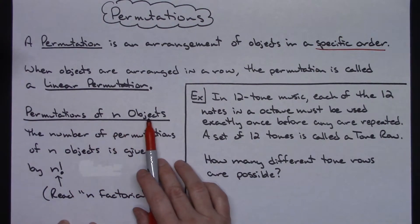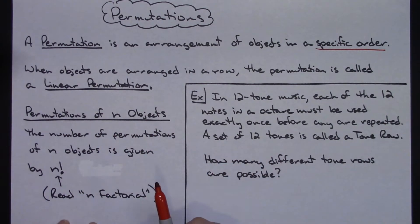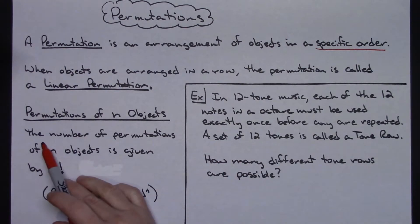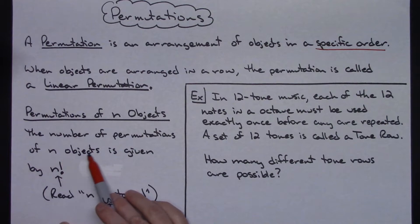A permutation of n objects—so we've got n number of objects here, and we need to find the number of permutations. The number of permutations of n objects is given by n factorial.